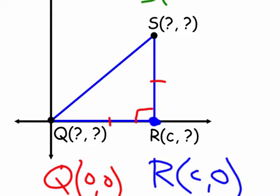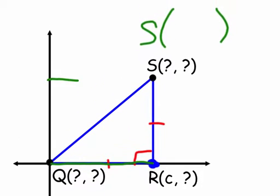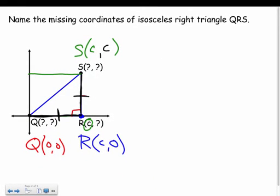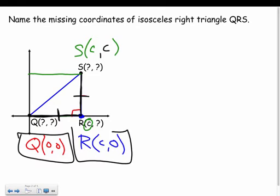For point S, I can figure out the X fairly easily — it's the exact same distance in the X direction as R, which is C units. Now for the Y distance: since the triangle is isosceles, the vertical distance also equals C, because the two legs are congruent. That X distance is the exact same as the Y distance. So the missing coordinates are: Q at (0,0), R at (C, 0), and S at (C, C).